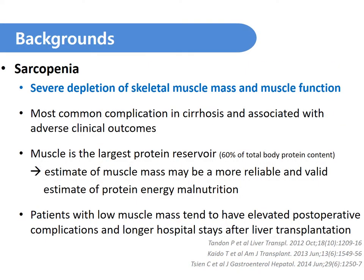Sarcopenia is defined as severe depletion of skeletal muscle mass and muscle function. It is the most common complication in cirrhosis and associated with adverse clinical outcomes. There are many previous reports that patients with low muscle mass tend to have elevated postoperative complications and longer hospital stays. However, it is still debated whether muscle depletion is a consistent predictor of mortality after liver transplantation.